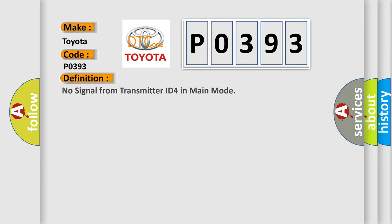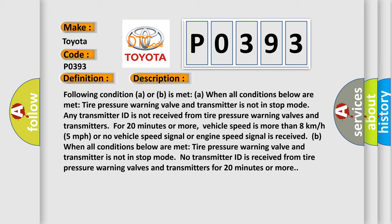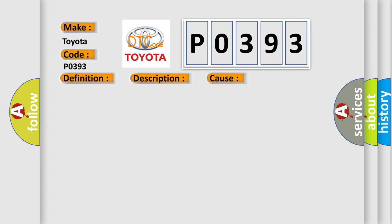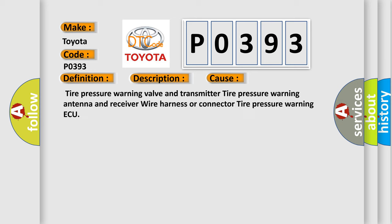The basic definition is: No signal from transmitter ID4 in main mode. This DTC code is triggered when condition A or B is met: all tire pressure warning valves and transmitters are not in stop mode, and no transmitter ID is received from tire pressure warning valves and transmitters for 20 minutes or more, with vehicle speed more than 8 km/h (5 mph), or no vehicle speed or engine speed signal is received. This diagnostic error occurs most often due to faults in the tire pressure warning valve and transmitter, the tire pressure warning antenna and receiver, or the wire harness and connector.